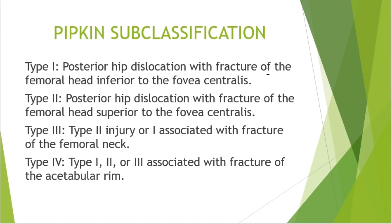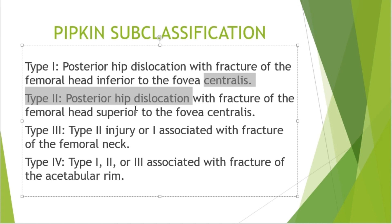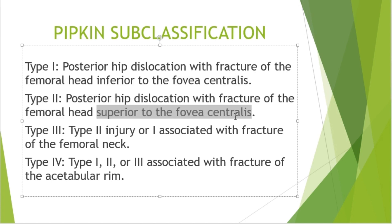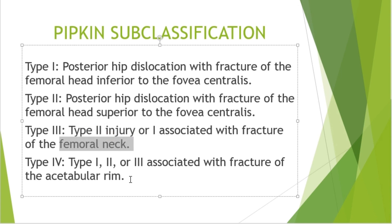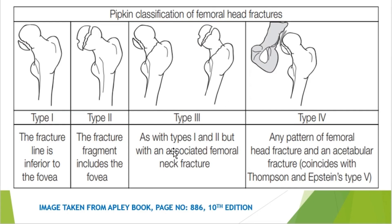Moving to the summary of the Pipkin classification: Type 1 is posterior hip dislocation with fracture of the femoral head inferior to the fovea centralis. Type 2 is superior to the fovea centralis. Type 3 is when type 1 or type 2 is associated with a femoral neck fracture. Type 4 is any femoral head fracture pattern associated with an acetabular rim fracture.